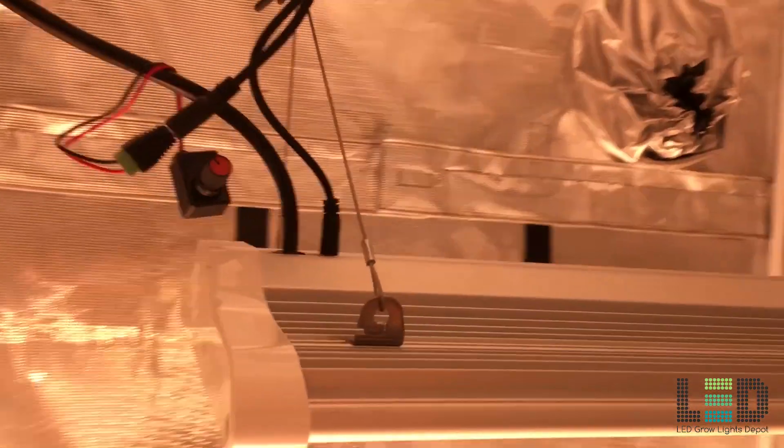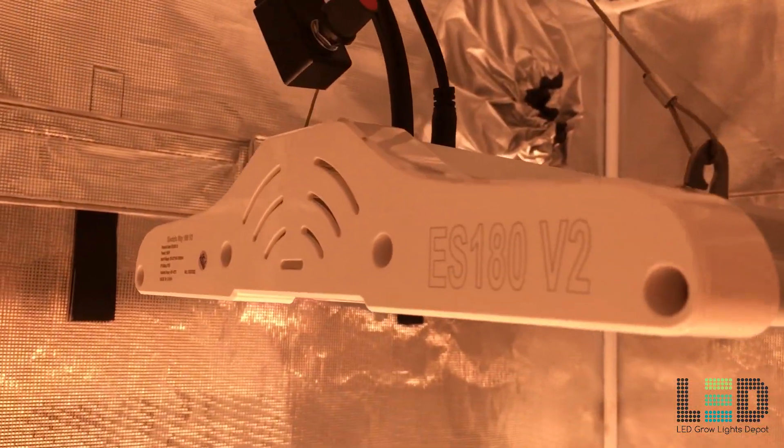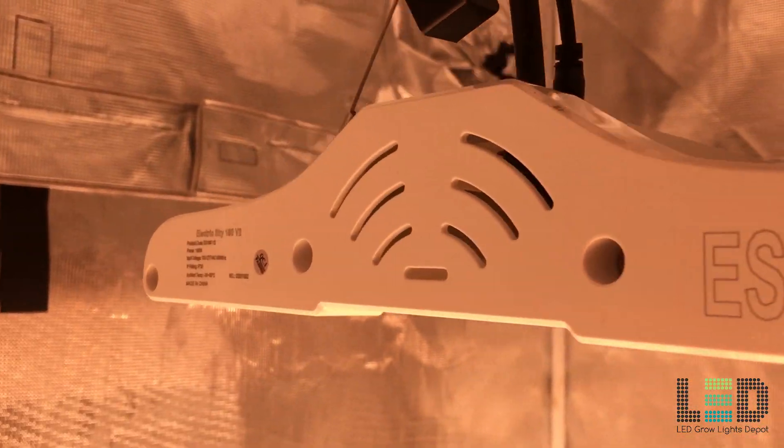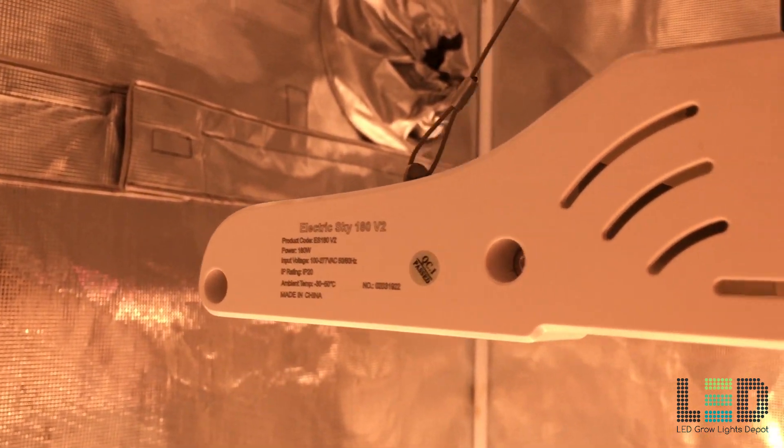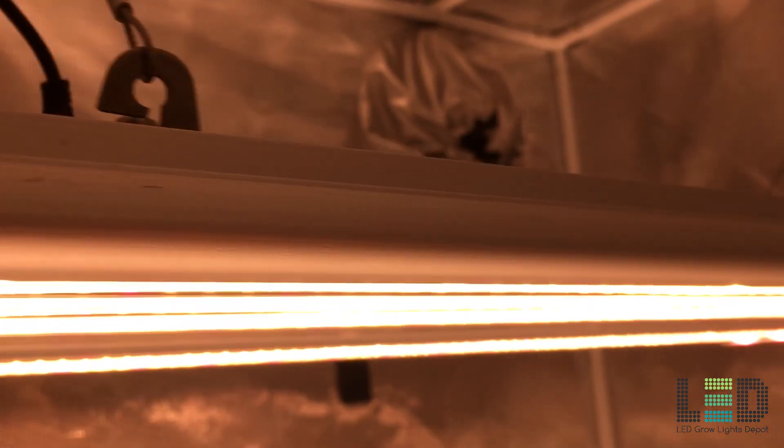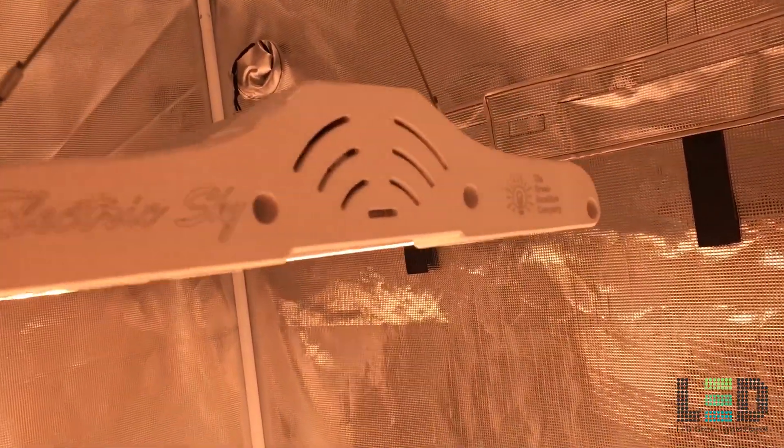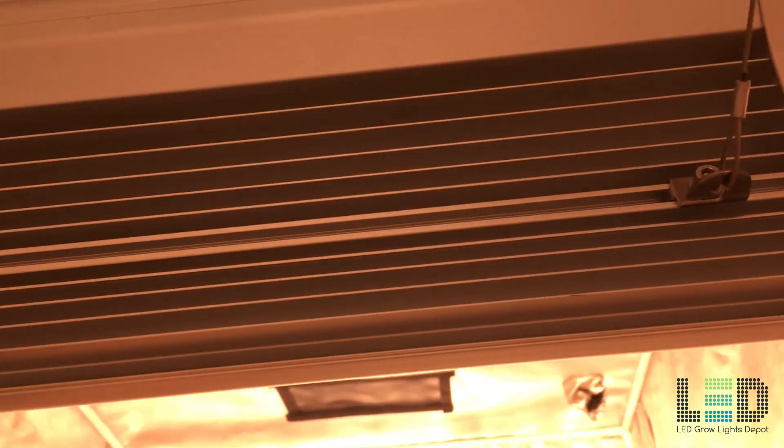The unit measures 24.5 by 12 by 2.4 inches, and it weighs 14.5 pounds. Most of the fixture's weight can be attributed to the large aluminum heat sink that houses the Mean Well power supply in the center of it, as well as acting as a thermal sink for the six rows of LEDs that run across the bottom of the unit.